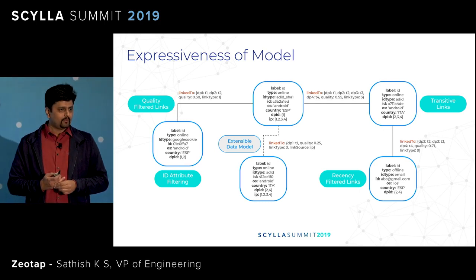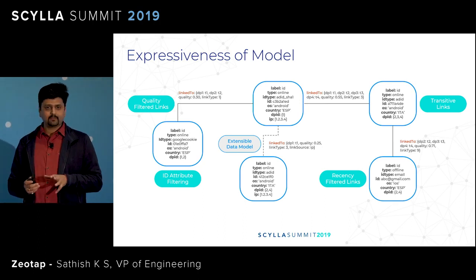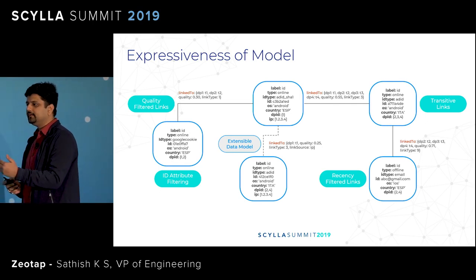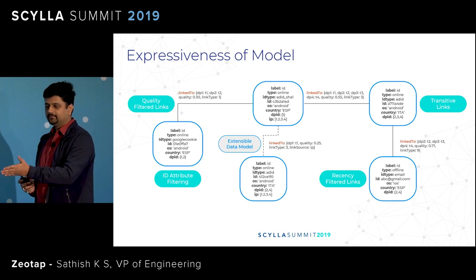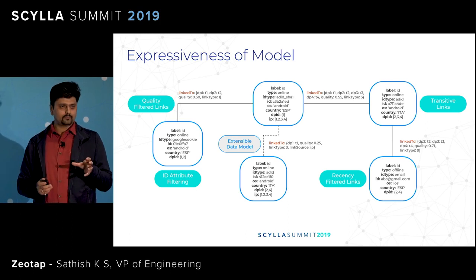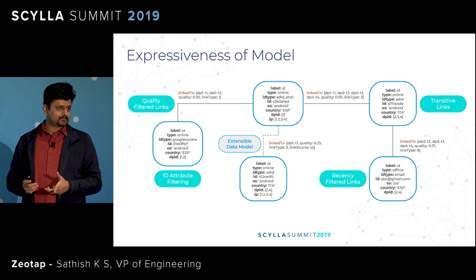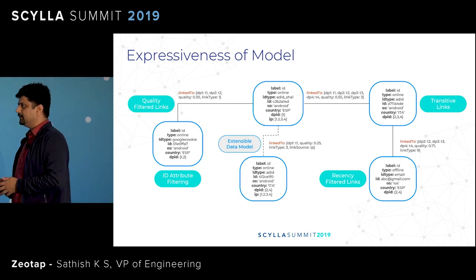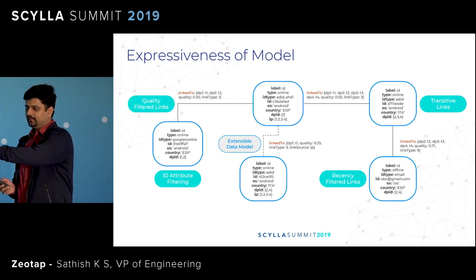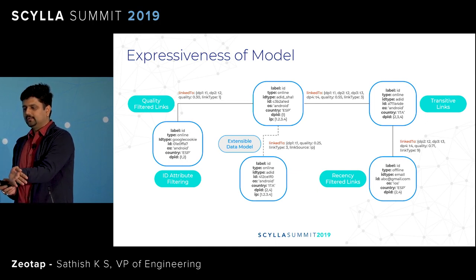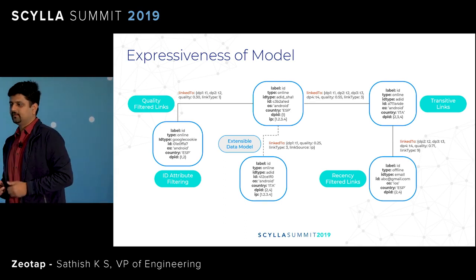Coming to the expressiveness of the model, we had three primary business read requirements. One of the most important is transitive linkages. Our ID graph keeps on getting built with time — data partners keep on sharing linkages with us and our graph keeps changing. At any point in time, we do not store any pre-computed list of connected IDs to a particular ID; we do that at the time of traversal. Starting from the email abc at gmail.com, it is connected to that Google cookie on the leftmost side of the slide, and we should be able to reach it as part of our traversal — that is what we mean by transitive linkages.